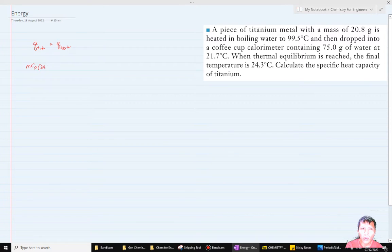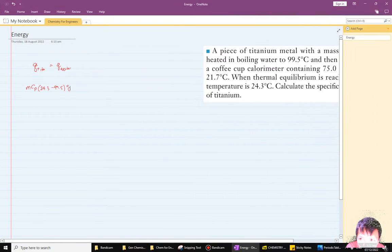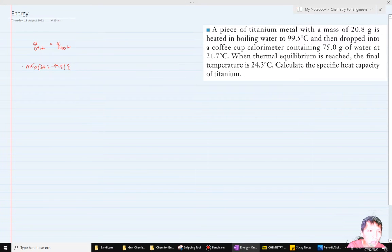The temperature change is 24.3 minus 99.5, which will give you a negative value. This should be a negative value because the titanium releases heat. A negative value indicates an exothermic process - the titanium is releasing energy.